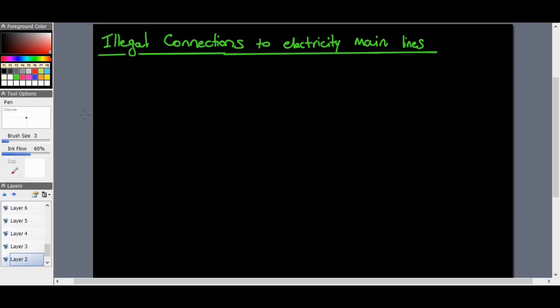Now the title of our session for today is the illegal connections to electricity main lines. We'll pull up an image to see. We all probably have seen this. Where does this mostly occur? It mostly occurs in our informal settlements. That's the nice term to give it, though, usually in South Africa.